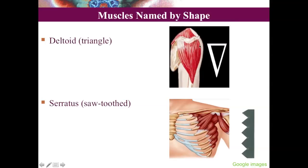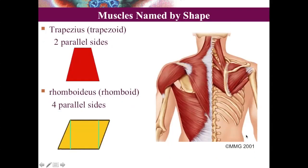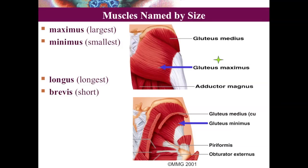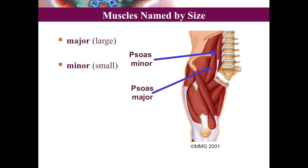Named by location: the muscle above the spine of scapula is supraspinatus and below is infraspinatus; the muscle in front of tibia is tibialis anterior and behind is tibialis posterior. Named by shape: deltoid means triangle — it's triangular in shape; serratus has a sawtooth appearance; trapezius is trapezoid-shaped; rhomboidus is rhombus-shaped. Named by size: in the gluteal region, the largest is gluteus maximus and smallest is gluteus minimus; long muscles are called longus, short ones brevis; large muscles are major and small ones minor.